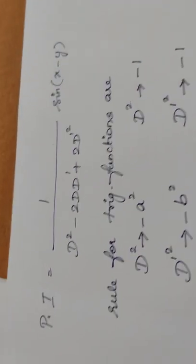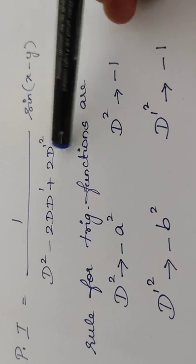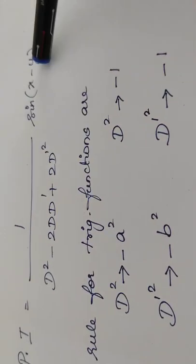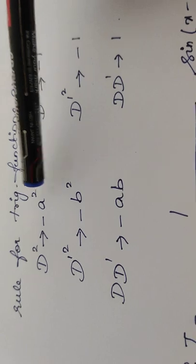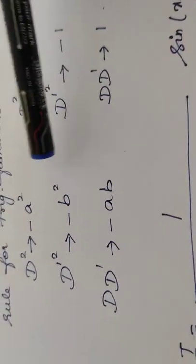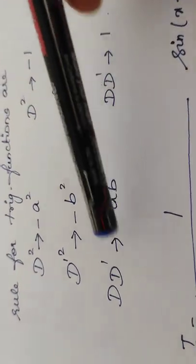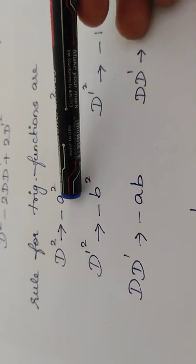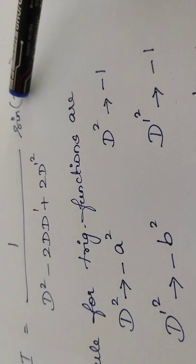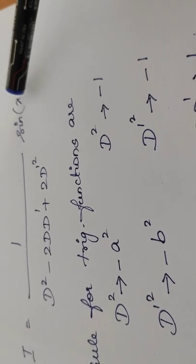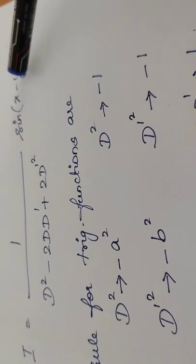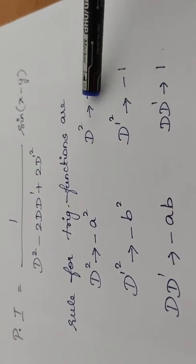The particular integral equals 1 divided by the operator expression in the denominator, into sin(x − y). The rule for trigonometric functions: whenever a trigonometric function appears in the particular integral, replace D² by −a², D'² by −b², and DD' by −ab, where a is the coefficient of x and b is the coefficient of y in the argument. Here the coefficient of x is 1, so a = 1, and the coefficient of y is −1, so b = −1.